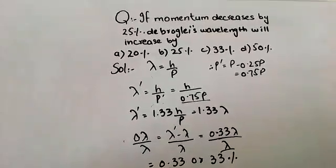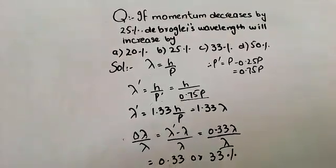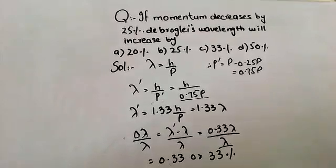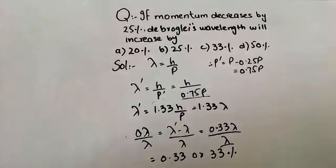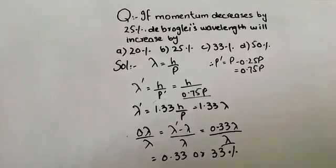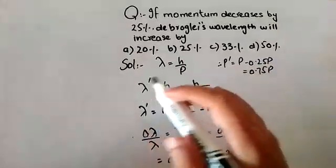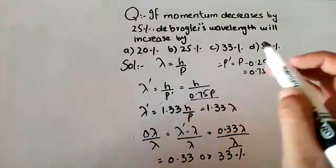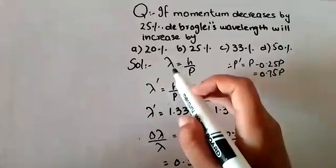If momentum decreases by 25%, then de Broglie's wavelength will increase by what amount? In this question we are asked if momentum decreases by 25%, then de Broglie's wavelength will increase by: the options are 20%, 25%, 33%, or 50%. We will use the formula.